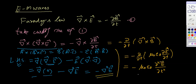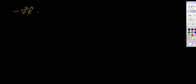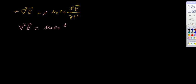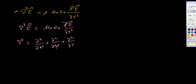Setting the left-hand side equal to the right-hand side: minus del²E equals minus μ₀ε₀ ∂²E/∂t². The minus signs cancel, giving del²E equals μ₀ε₀ ∂²E/∂t². The del² here is the Laplacian operator: ∂²/∂x² plus ∂²/∂y² plus ∂²/∂z². This is the required result for the electric component wave equation.